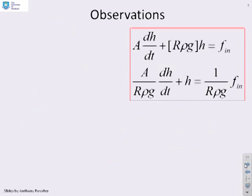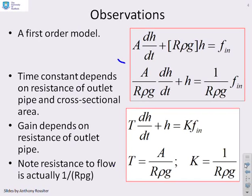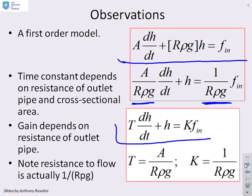What next, then? Well, you remember we talked about time constant forms in the previous video. So that's what we're going to do here. First, we're going to take that model, the model given up here, and then we're going to divide through by R rho g in order to put it in time constant form. You'll see that's what we've done here. We've divided through by R rho g. And what we end up with is a model of this form, T dH/dt plus H equals K times the flow rate in, with a time constant of A over R rho g and a gain of one over R rho g.